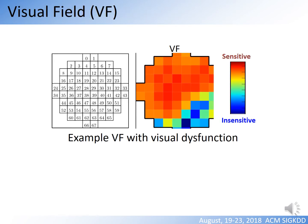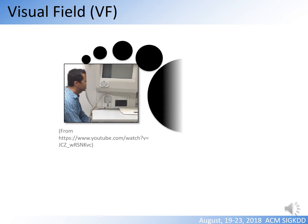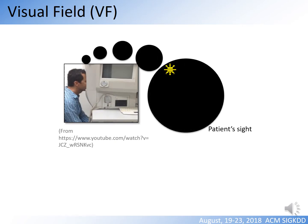Conventionally, visual dysfunction caused by glaucoma has been detected using the visual field test, or VF for short. During a visual field test, a patient presses a button whenever a tiny light is observed. No response indicates possible vision loss in that location of the retina.